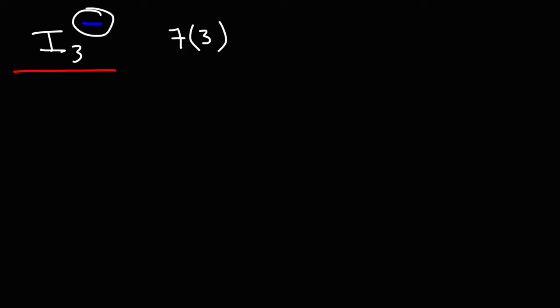Now, this polyatomic ion does have a negative charge, so we need to add one to the total number of valence electrons. 7 times 3, that's 21 plus 1. So we get a total of 22 valence electrons.